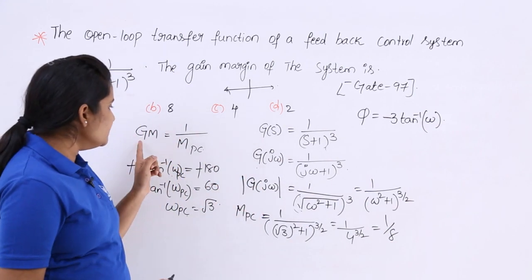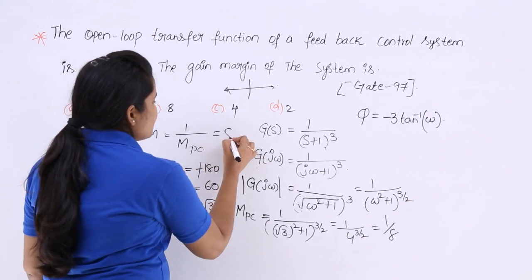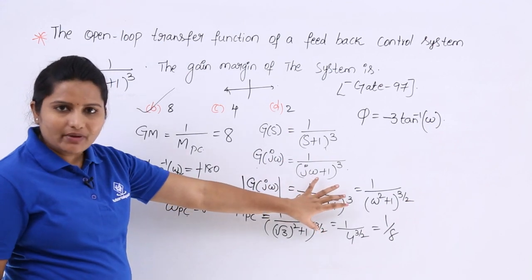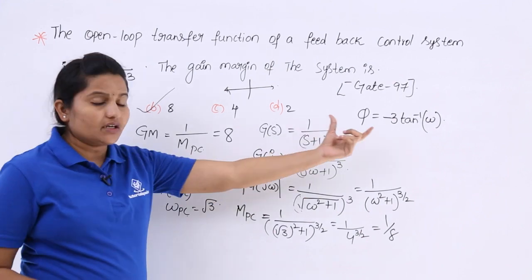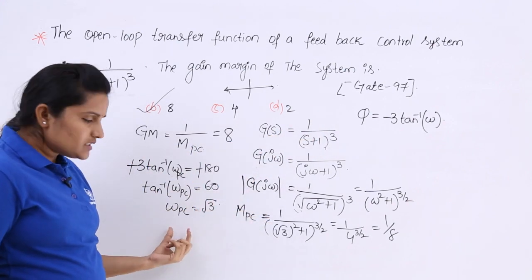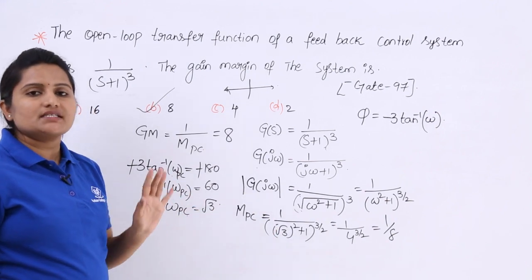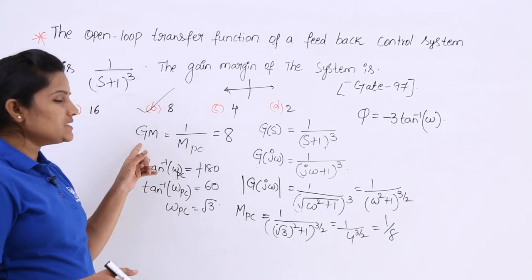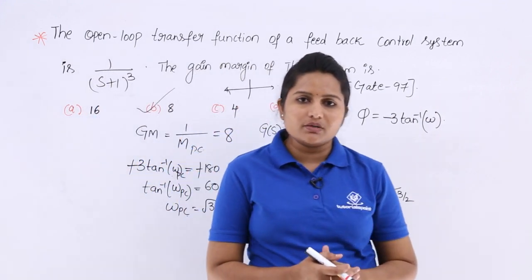We do not want the magnitude itself — we need the gain margin, which is the reciprocal of the magnitude at phase crossover frequency. So the gain margin = 1/(1/8) = 8. This is the correct answer for this problem. In summary: first find the magnitude expression, then find the phase crossover frequency by equating the phase to minus 180 degrees, substitute into the magnitude, and finally take the reciprocal to get the gain margin.